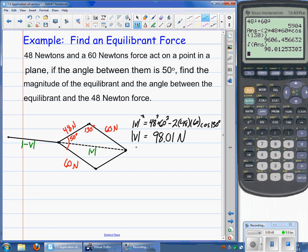Which, then, that also tells us that the magnitude of the equilibrium force here or the one vector that will cancel out both of these or cancel out the resultant of those two is going to be also equal to 98.01 newtons.